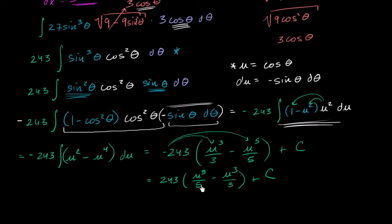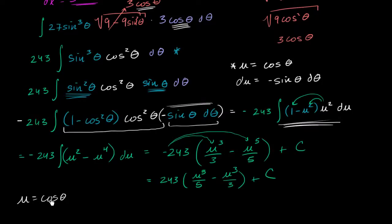But now we've got to go and undo everything — we have to undo the substitutions. The last substitution we had done was that u was equal to cosine theta. We might just substitute u with cosine theta, but then we'd have everything in terms of cosine theta, which still doesn't get us to x.